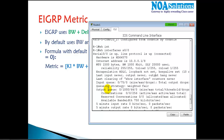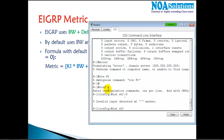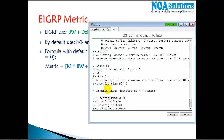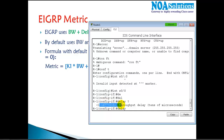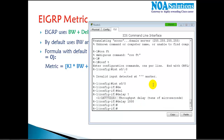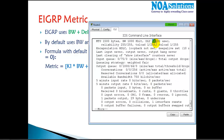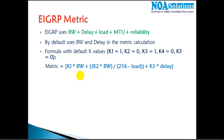Changing delay is generally not required, but if needed, go to the interface and use the 'delay' command. For example, entering 1000 sets the delay to 10,000 microseconds, because the value is in tens of microseconds — it multiplies by 10 automatically. Verifying with 'show interface s0/0' confirms the delay is now 10,000 microseconds.